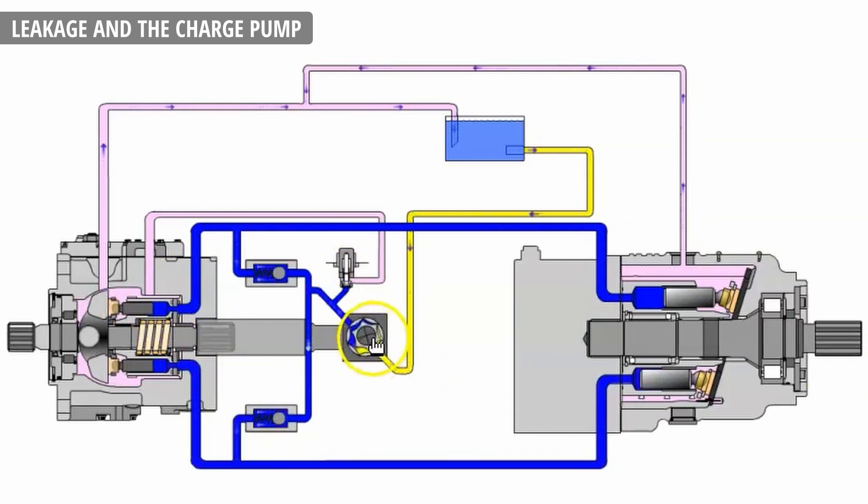So the function of the charge pump is to put oil which leaked from the case drain back into the system, replenish the system with lost oil. The size of charge pump is usually 10-20% the size of the main pump. It's only designed to pick up the expected case drain.